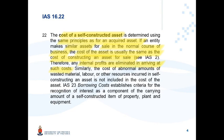For example, any internal profits are eliminated in arriving at such cost. Similarly, the cost of abnormal amounts of wasted material, labor, or other resources incurred in self-constructing an asset is not included in the cost of that asset. You follow similar principles as when self-constructing inventories for sale — the only difference is you are now self-constructing a PPE item for use in the business.